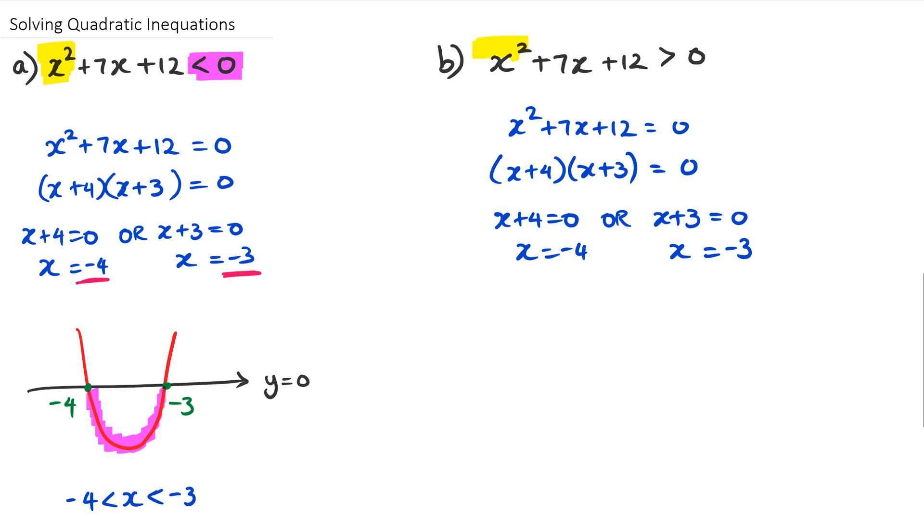Now, once again, we look at the coefficient of x-squared. It is still positive. And because it's a positive parabola, it's going to look like this. And we are going to get our x-axis here where the value of y is equal to zero. So we've figured out what our two x-intercepts are, which is negative four and negative three.